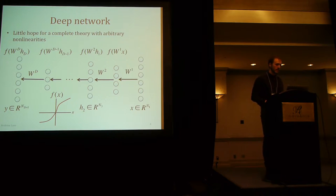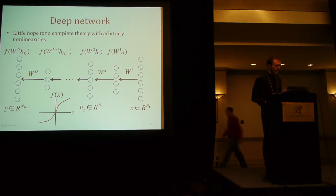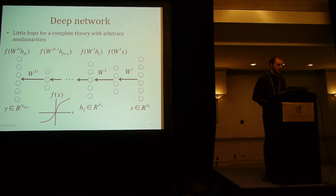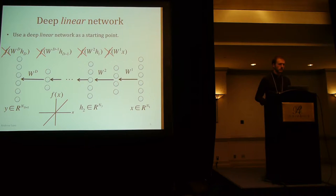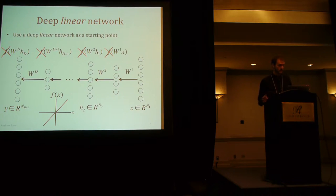A deep network has these complicated non-linearities F at every layer, and that's really what's hard about doing theory for these things. So we're going to take a very drastic approach and just cut out all the non-linearities, making it completely linear.